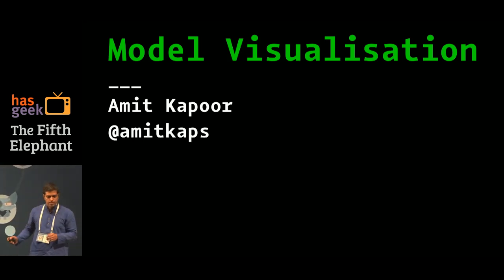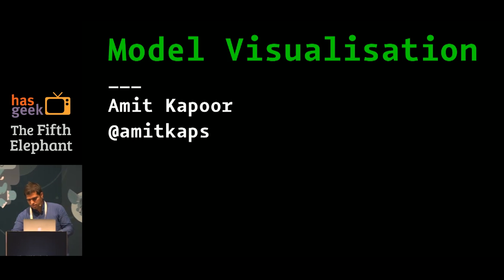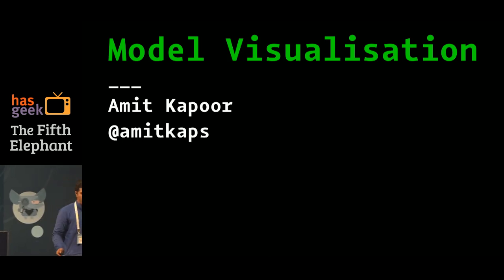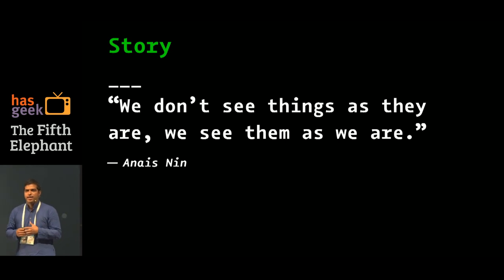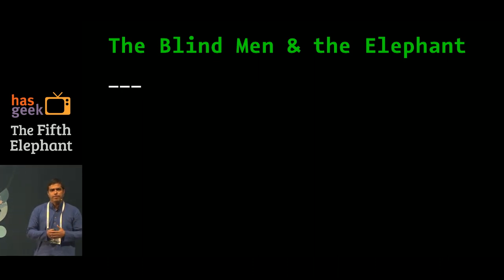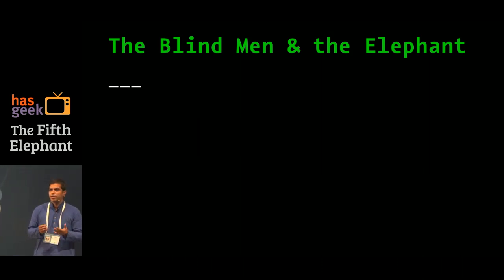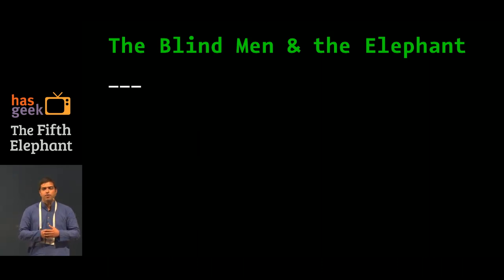I'm going to start with a quick story, because we don't see things as they are — we see them as we are. This story is really about the blind men and the elephant. I'm sure many of you may have already heard this; it's pretty popular in different contexts. The story goes: there are six blind men who are brought forward to come and see an elephant. They want to make an observation by their own hands to find out what the elephant really is and build a model for it.